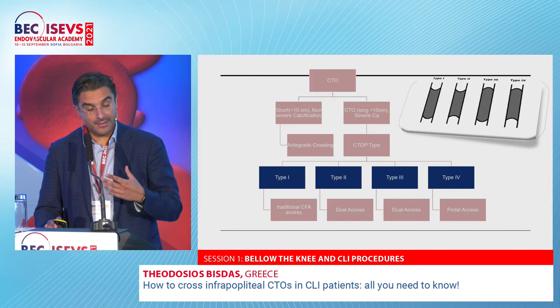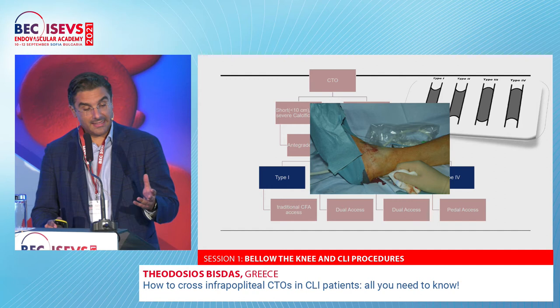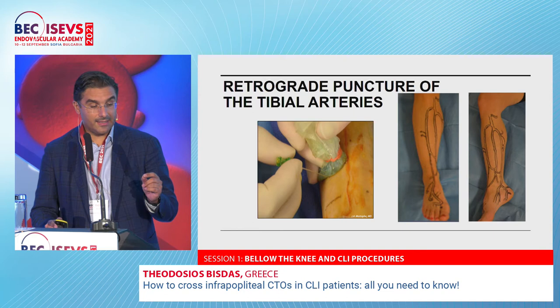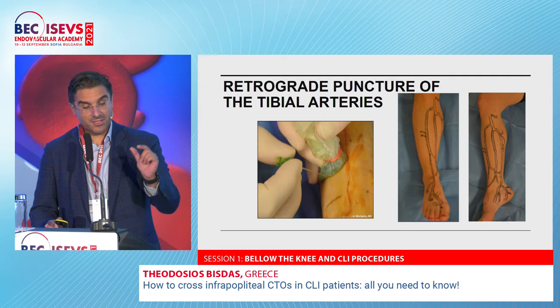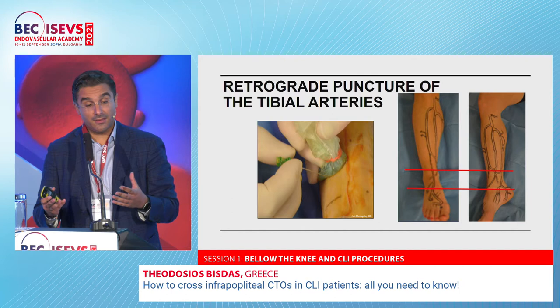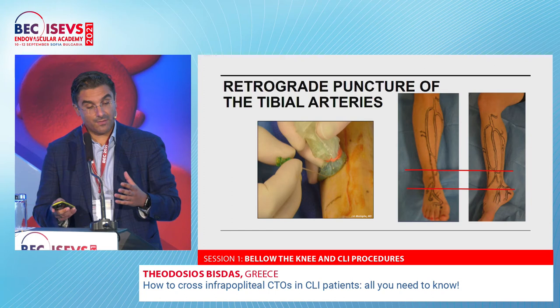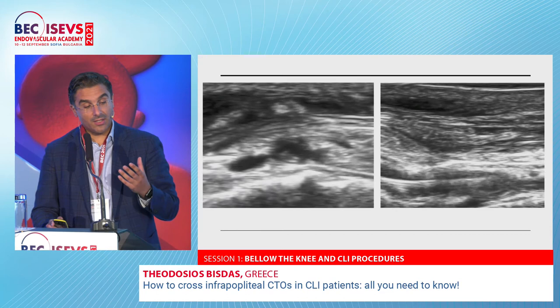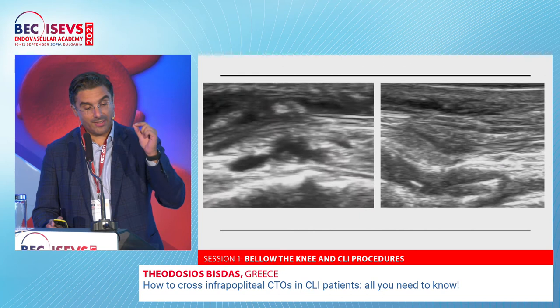This is a classical transpedal approach in the posterior tibial artery. Use the hockey device for ultrasound — it's more comfortable to work with. Try to puncture above and below the ankle; if you go too high, especially for the fibular artery, you may not be able to control bleeding — we have seen cases of compartment syndrome after opening these vessels. We use ultrasound for the puncture, going at 12 o'clock, and you can see very nicely how the wire gets inside.